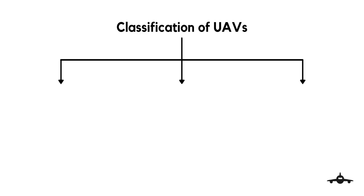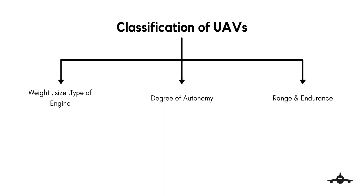UAVs are classified as any other aircraft in the following categories: on the basis of weight and size and type of engine, on the basis of degree of autonomy, and on the basis of range and endurance.